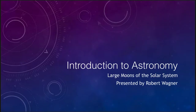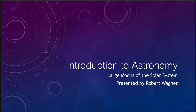Greetings and welcome to the introduction to astronomy. In this lecture we are going to discuss the large moons of the solar system, and specifically those moons around the outer giant planets. Now there are a number of moons in the inner solar system — just three of them — so let's look at the moons overall here.